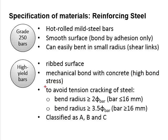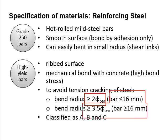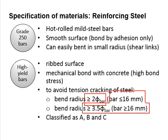To ensure against tensile cracking of the steel, the bend radius has to be limited to 2 bar diameters for reinforcement bars of less than 16 mm diameter, or has to be at least greater than 3.5 bar diameters when the bar size is more than 16 mm diameter.